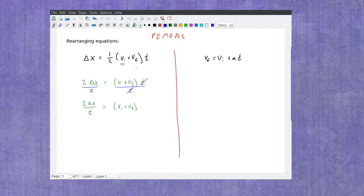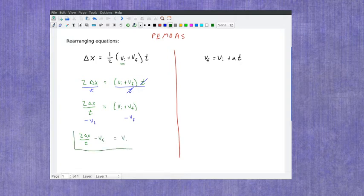Once I've done that now I'm down to something which is just in parentheses. So if I was going to now work with this because there's nothing else it can come outside of the parentheses. And I can now subtract the VF on both sides. Which would leave me with the two delta X over T minus VF equals VI. And I've got my full equation if I'm trying to solve for VI.